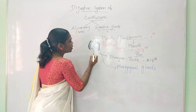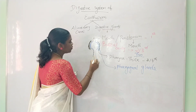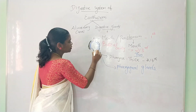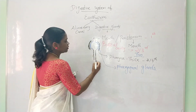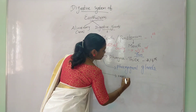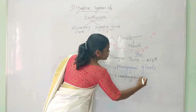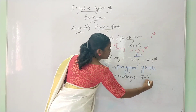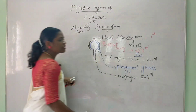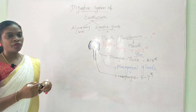After the pharynx, there is a narrow region that begins. This region is called the esophagus. The esophagus is found in segments 5 to 7.